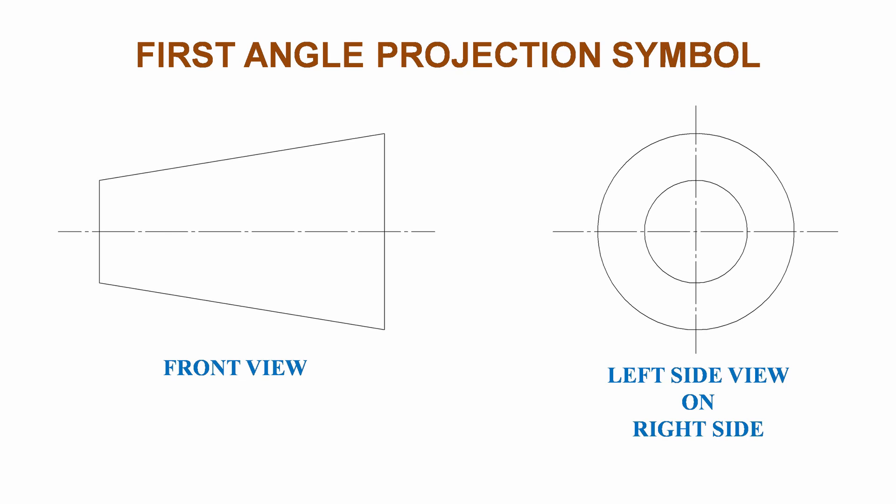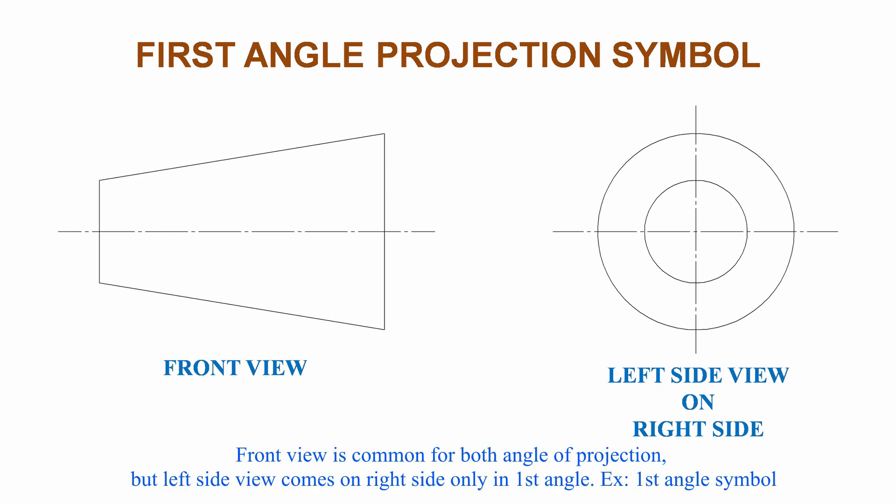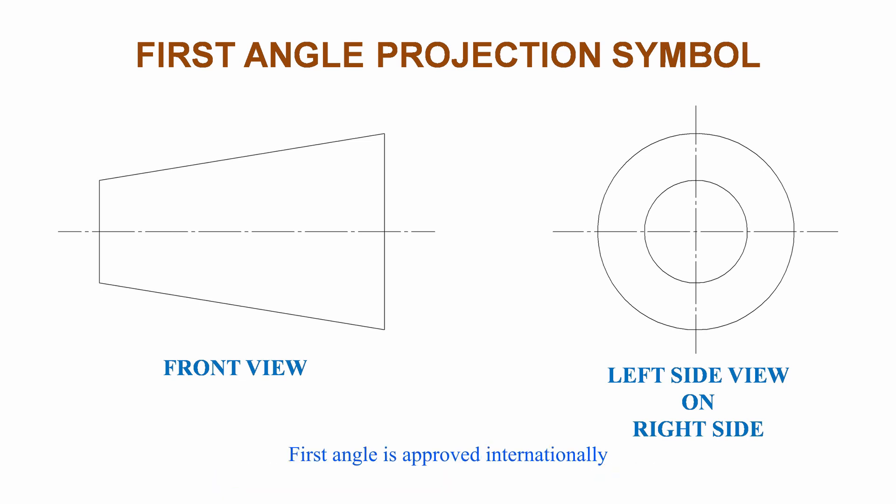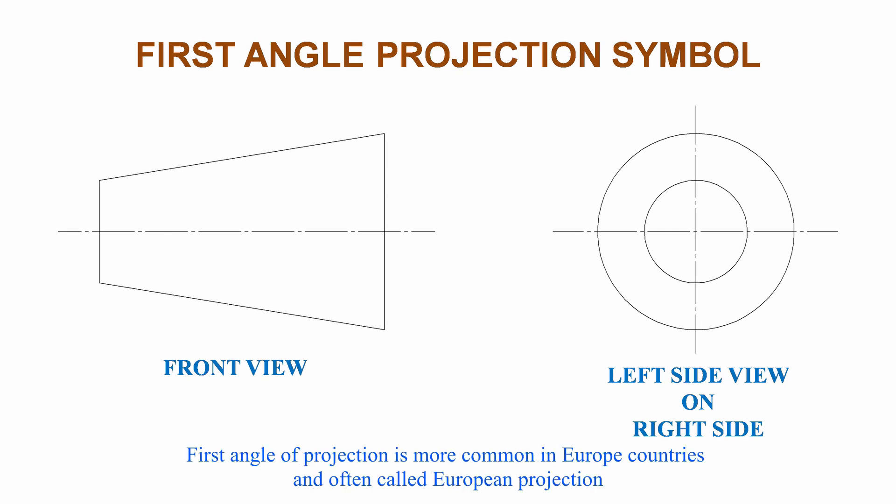For the first angle projection symbol, the front view is common for both angles of projection, but the left side view comes on the right side only in first angle projection. First angle projection is approved internationally. It is more common in European countries and is often called European projection.